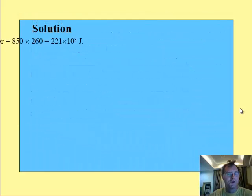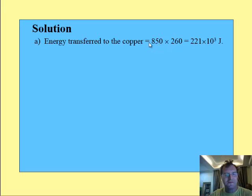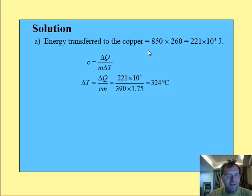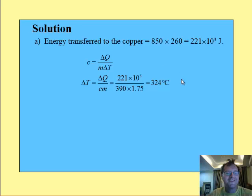My solutions work like this. Energy transferred to the copper is 850 times 260 which is 221 times 10 to the 3 joules. Putting the values in that I know, and notice how I know the specific heat capacity for copper, I can work out that the temperature change is going to be 324 degrees centigrade.